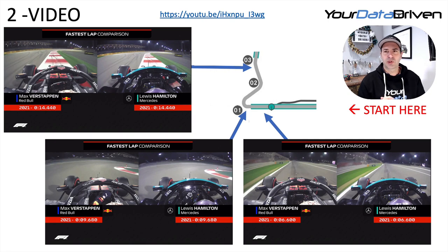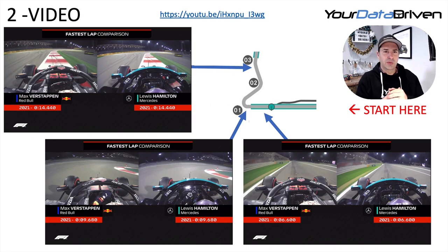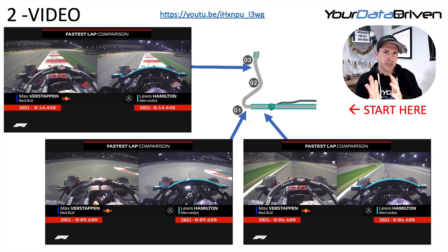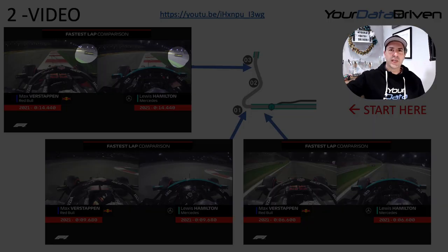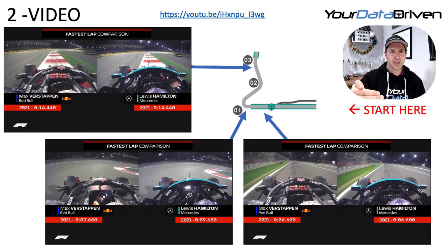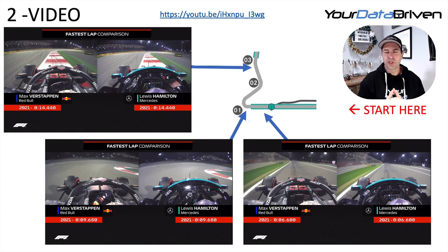Coming through turn three, they're both using quite a lot of kerb. Max is probably on the limit there. They're both trying to find the point of least resistance. Neither has a massive amount of steering lock. Looking at the marker board on the right, they're pretty much the same — maybe Max has gained a slight bit on this corner, but there's not really a lot of difference.